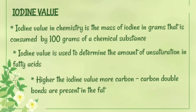The next topic is iodine value. Iodine value is the mass of iodine in grams consumed by 100 grams of a chemical substance. In the case of fats, iodine value is used to determine the amount of unsaturation in a fatty acid. The higher the iodine value, the greater the number of carbon-carbon double bonds present in the fat, meaning the fat is more unsaturated.